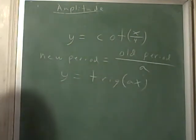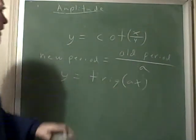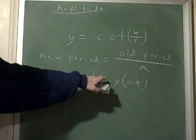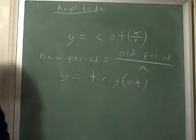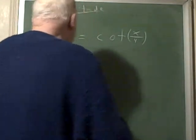Write this thing down: new period equals old period over a, where you're talking about y equals trig of a times x. Now let's graph this cotangent.